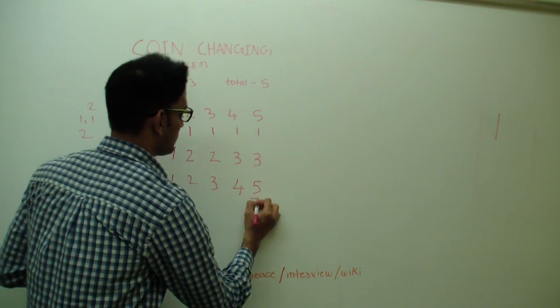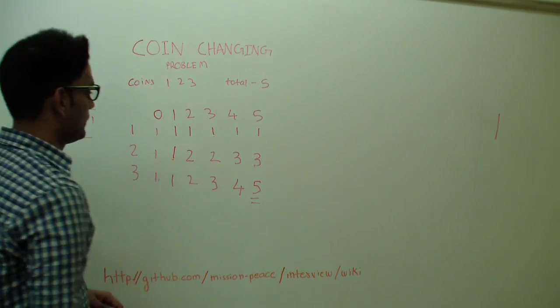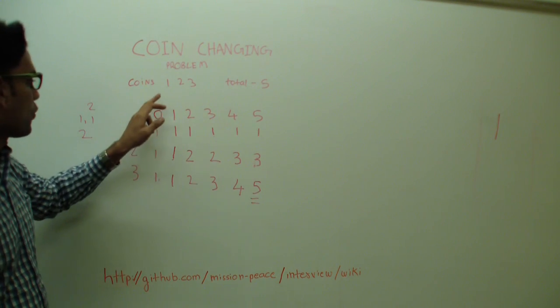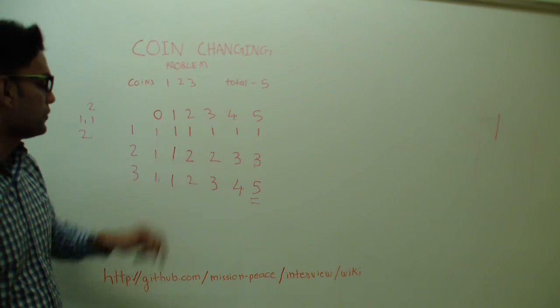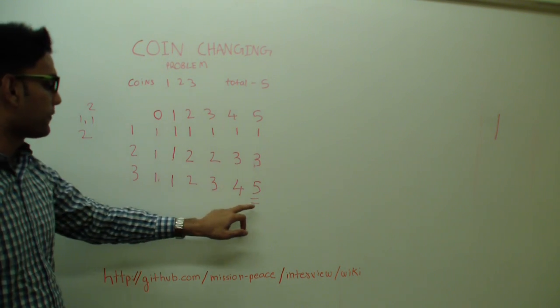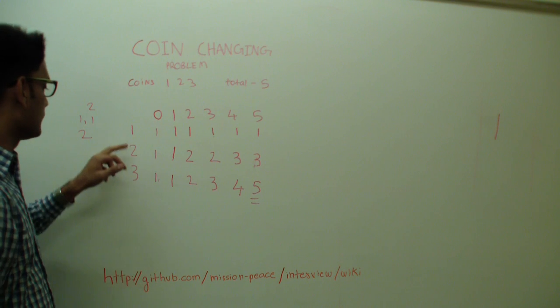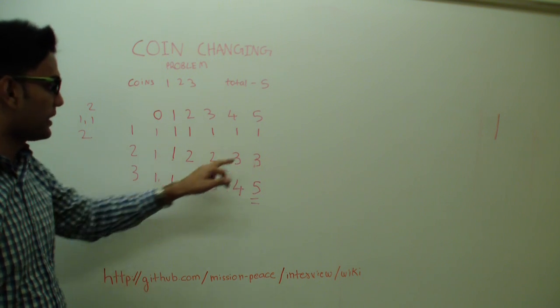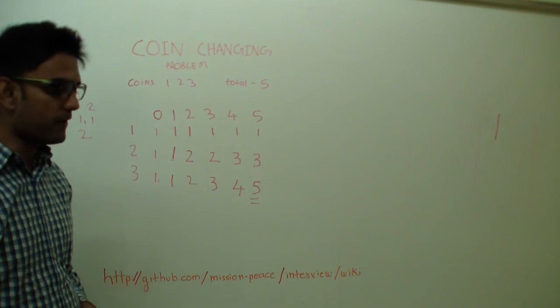So this is your answer. If you have a total of 5 and coins 1, 2, and 3, there are 5 total ways in which these coins can be combined to get 5.